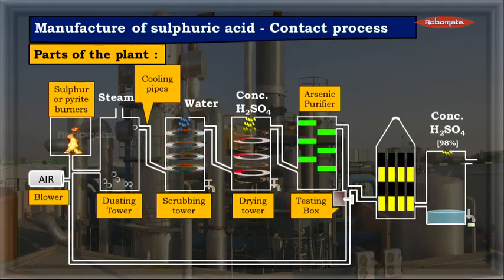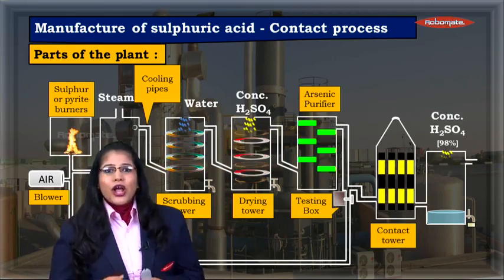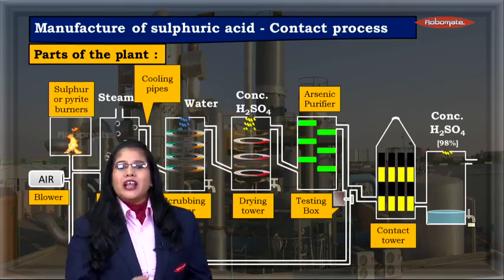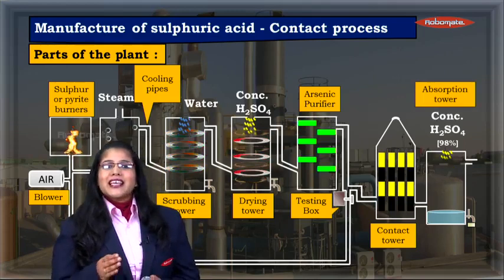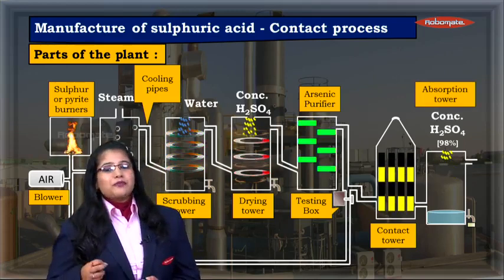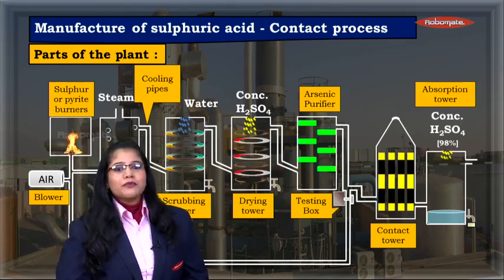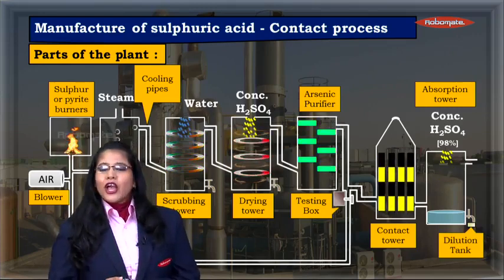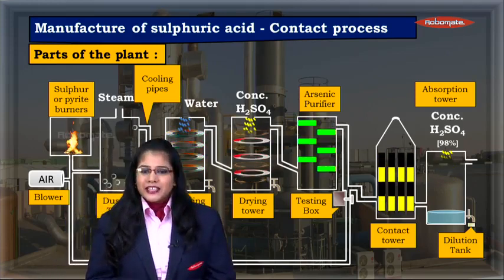Clean and dry sulphur dioxide is next sent to the contact tower. This is the most important process of the entire plant where sulphur dioxide is converted to sulphur trioxide. After the sulphur trioxide conversion, it is taken into the absorption tower where it is absorbed by concentrated sulphuric acid. After absorption, it is then finally diluted in the dilution tank to the required concentration. This is the entire set up of the plant.